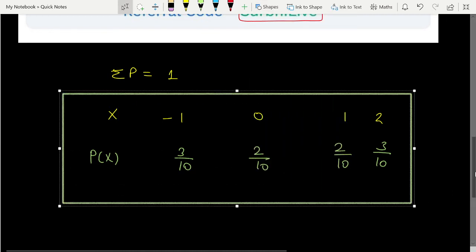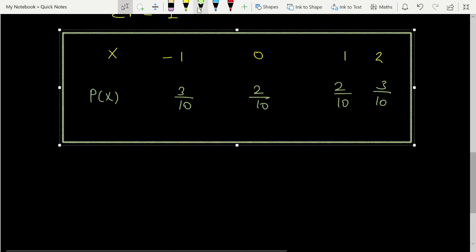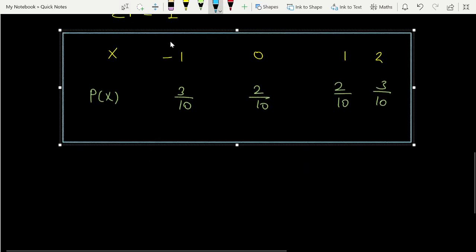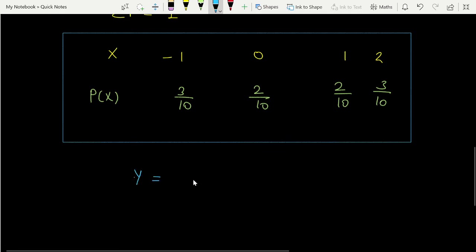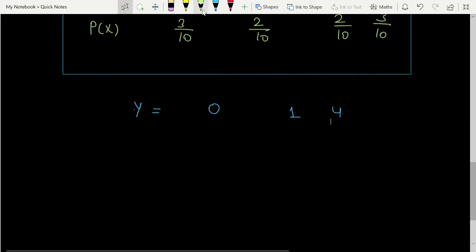Now here we can make a table for Y where we write what possible values Y can have. So here you see, Y can be given as 0, 1, or 4. We need to find probabilities for these three values of Y that are asked in the question. Y values are X squared.